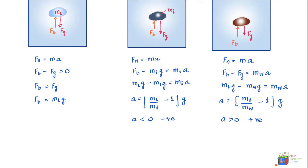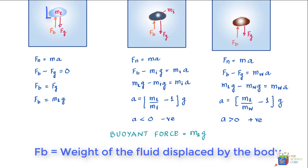The key takeaway is that there is a buoyant force acting on a body when it is submerged in a liquid, equal to ML × g. More formally, this is Archimedes' principle: when a body is fully or partially submerged in a fluid, a buoyant force FB acts on the body directed upward, with a magnitude equal to the weight of the fluid displaced by the body.